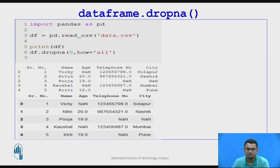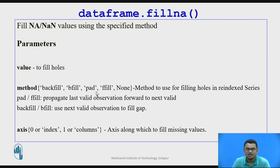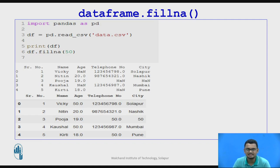Now let us talk about the fillna function. The parameters include the value we want to fill in place of missing values — for example, we can fill 0 instead of missing values. The method parameter specifies how to fill: options include backfill or bfill, and padding or ffill. The axis parameter is again 0 or 1 for rows or columns.